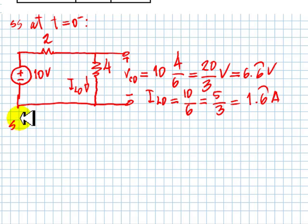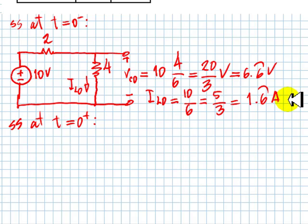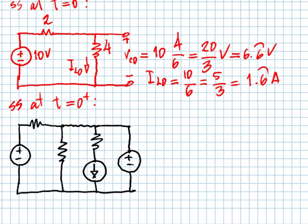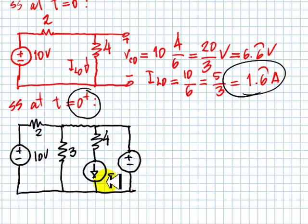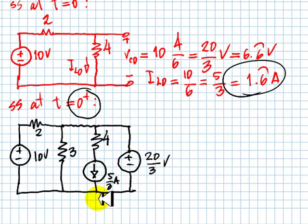Now we take a snapshot right after we move the switch at zero plus. At zero plus, the inductor is represented by a current source with this value, and the capacitor is represented as a voltage source with this value. The switch is closed, so the 3 ohm resistor is now part of the network. The inductor's representation at t equals zero plus has the value 5 thirds of an amp. And this voltage is Vc0, the initial voltage in the capacitor, which is 20 thirds of a volt.